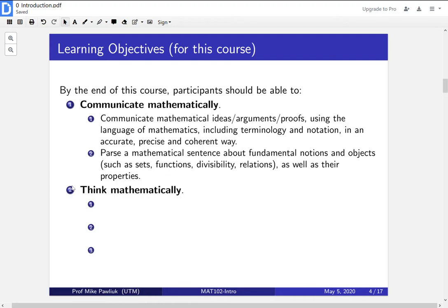The second bullet point is to think mathematically. So the first bullet point is about being able to speak the language. And the second bullet point is about meaningfully contributing. So what does it mean to think mathematically?